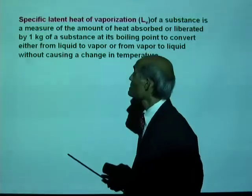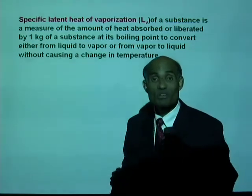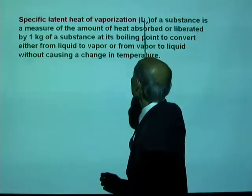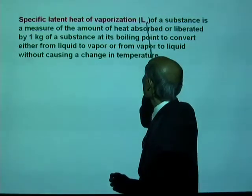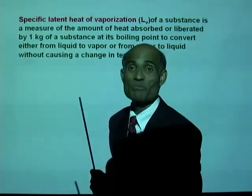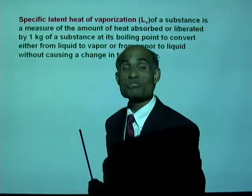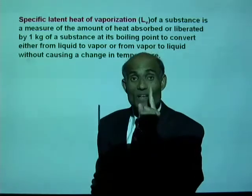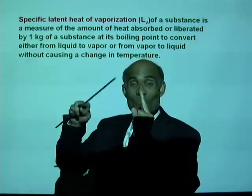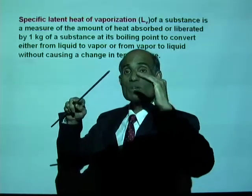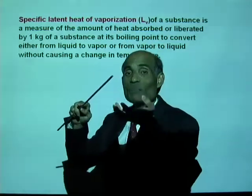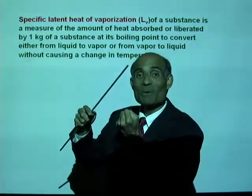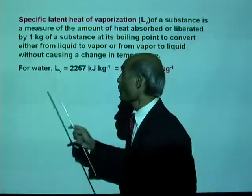Let's now define specific latent heat of vaporization. We will represent latent heat of vaporization by L sub V. It is a measure of the amount of heat absorbed or liberated by one kilogram of a substance at the boiling point to convert from liquid to vapor — latent heat is absorbed — or from vapor to liquid — latent heat is liberated.